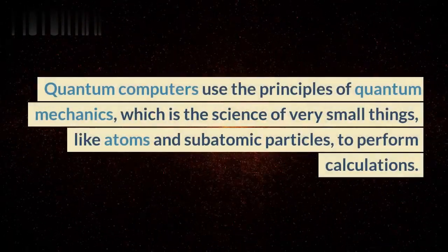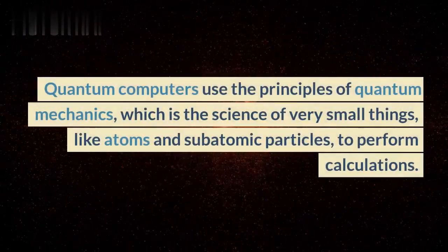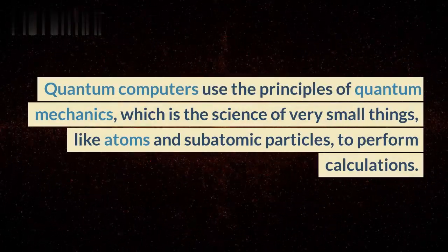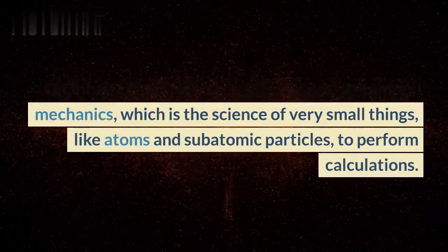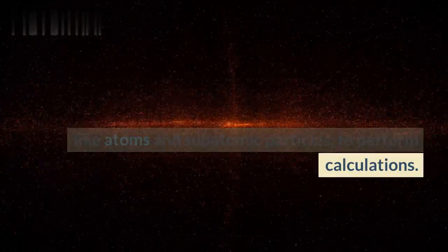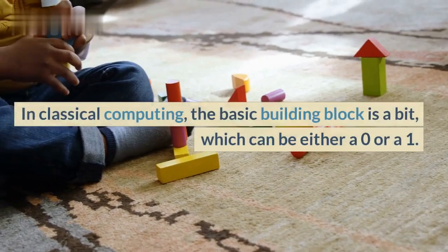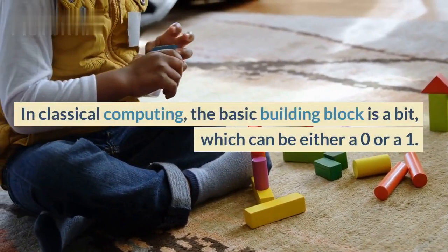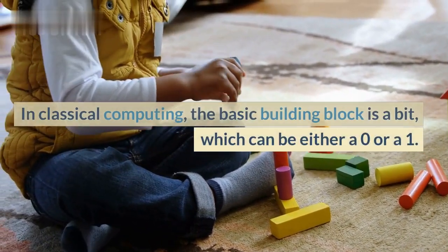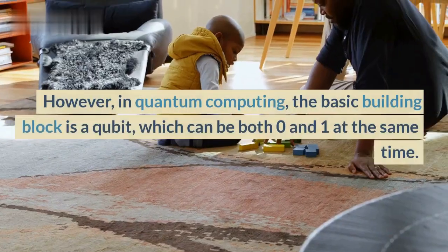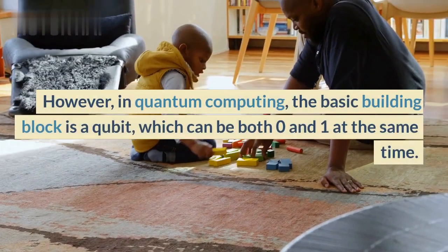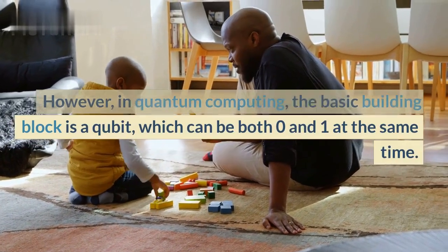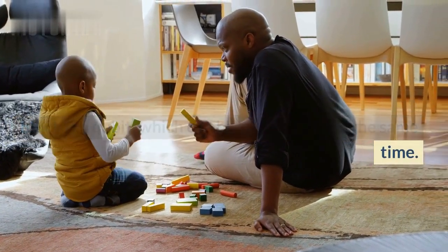Quantum computers use the principles of quantum mechanics, which is the science of very small things, like atoms and subatomic particles, to perform calculations. In classical computing, the basic building block is a bit, which can be either a zero or a one. However, in quantum computing, the basic building block is a qubit, which can be both zero and one at the same time.